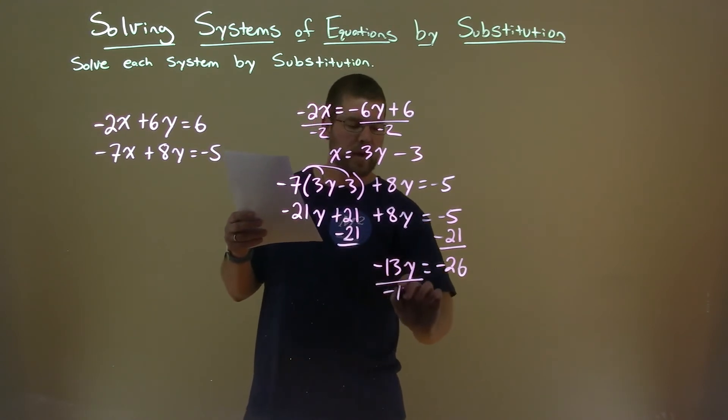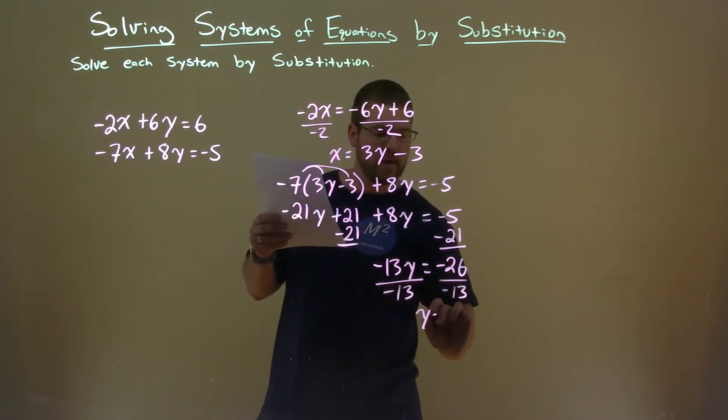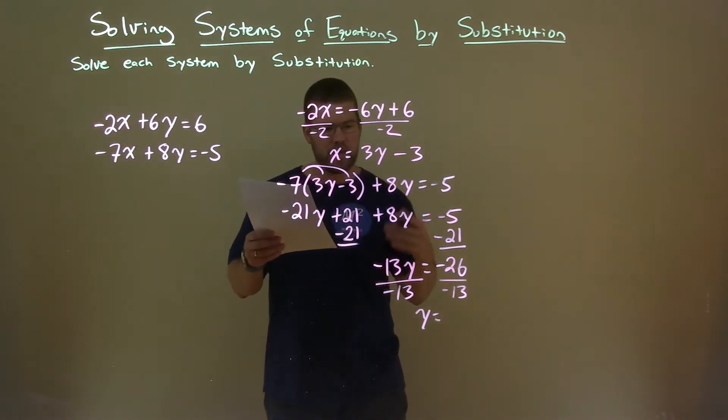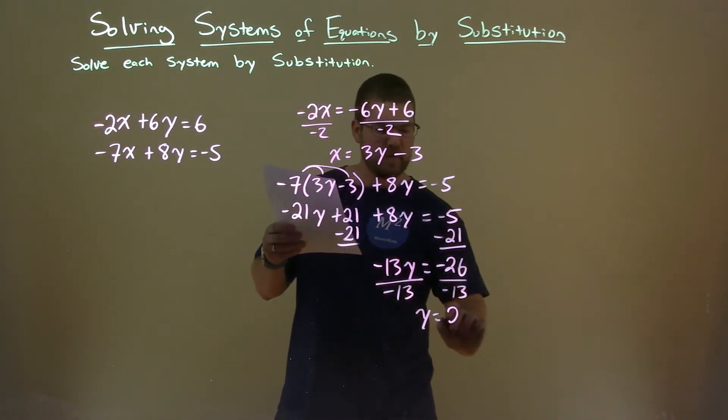Divide both sides by negative 13. And y equals negative 26 divided by negative 13, and that is a positive 2.